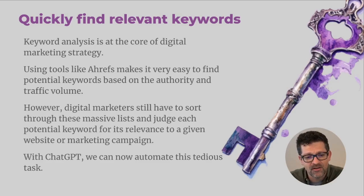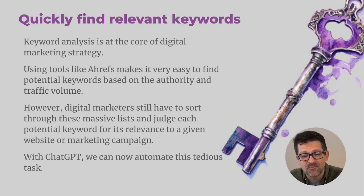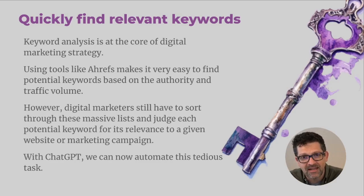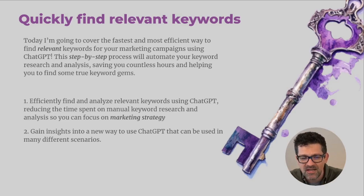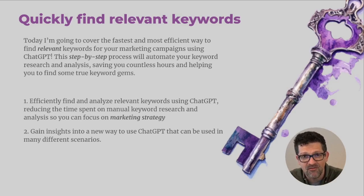As you know, if you're a digital marketer, keyword analysis is at the core of a lot of campaigns. There are tools like Ahrefs which make it very easy to find potential keywords based on authority and traffic volume. However, digital marketers still have to sort through massive lists of potential keywords to find the ones most relevant to whatever campaign they're working on, and to decode the searcher's intent behind those keywords. Today we're going to use ChatGPT to automate those tedious tasks.